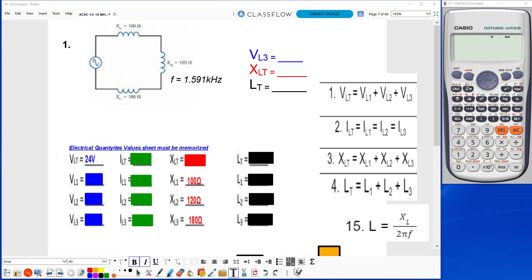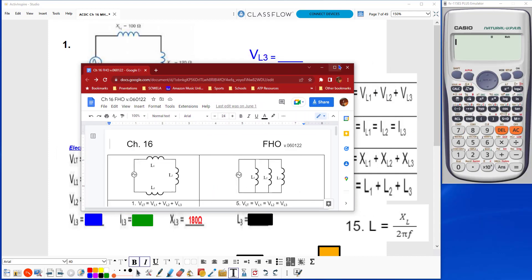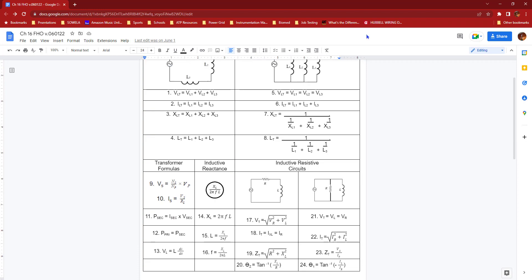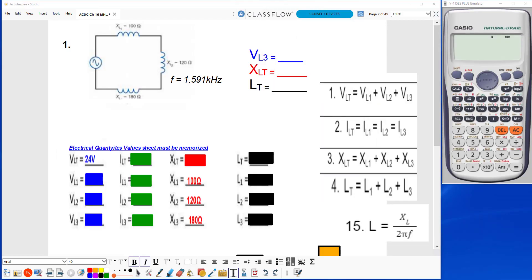The formulas we need from the chapter 16 formula sheet: formulas one through four and formula number 15. I have clipped them from the formula sheet to put them on the screen to make it easier to see which formulas I'm using.